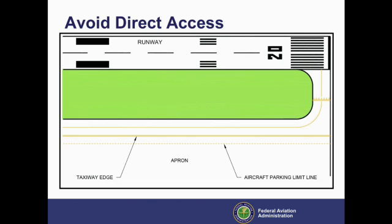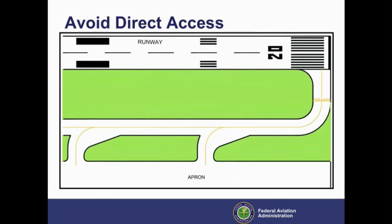A pilot taxiing from the left end of the ramp could mistake the runway for a parallel taxiway. The improved design, shown here, separates the taxiway from the apron by placing islands between several new taxiway access paths. Note that the new edge of the apron is where the aircraft parking limit line used to be, so there is no loss of parking area for airplanes on the ramp.